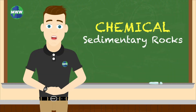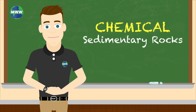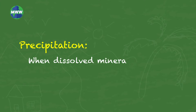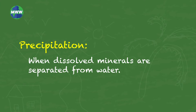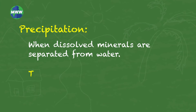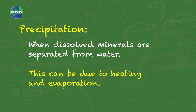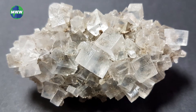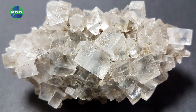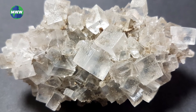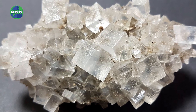Chemical sedimentary rocks form from precipitation of minerals from water. Precipitation is when dissolved minerals, like salt, are separated from water. This can be due to heating and evaporation. The remaining salt will compact and cement, forming halite.